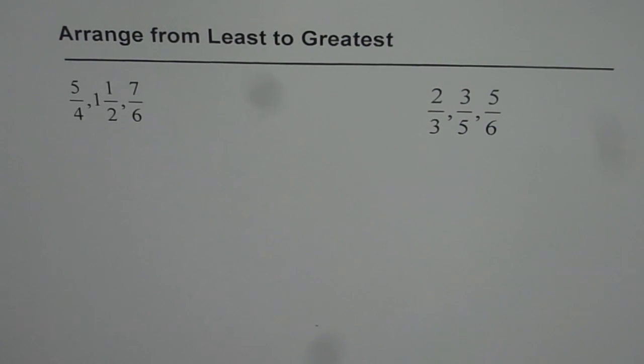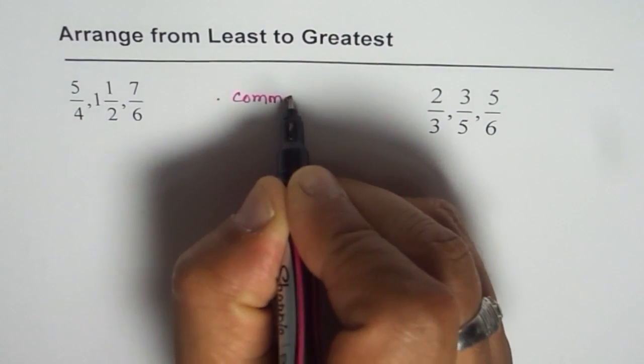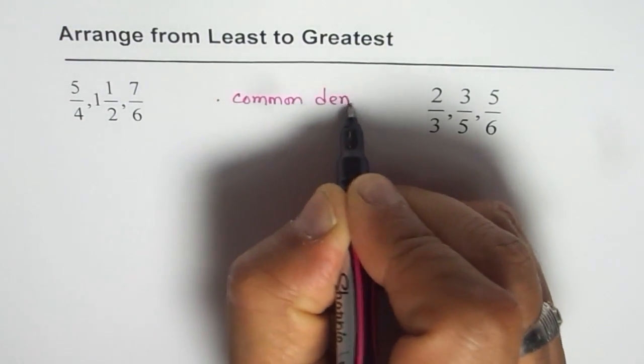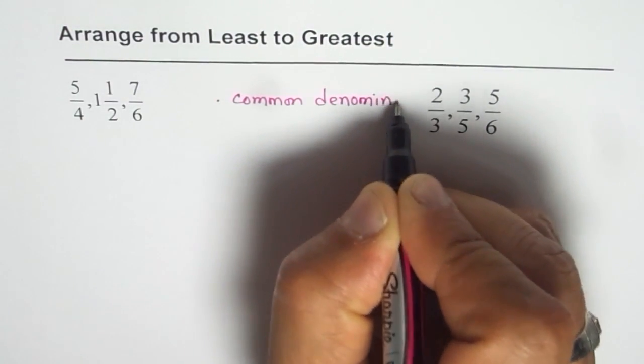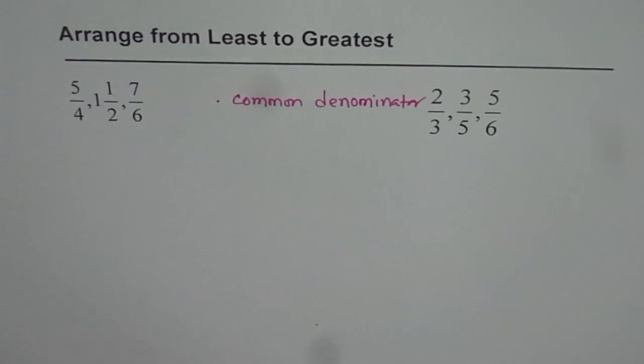One way to do it is to have common denominator. So the strategy for us will be to have common denominator. So if you have common denominator, it is very easy to compare. So that means we have to find least common denominator.